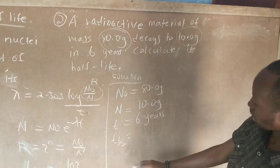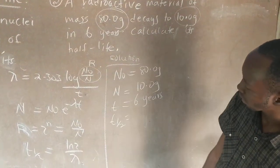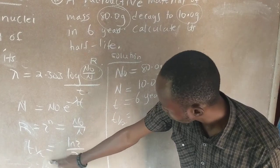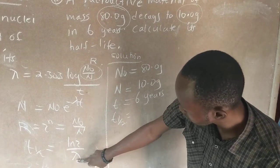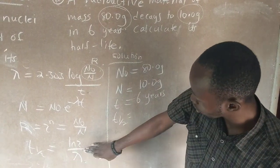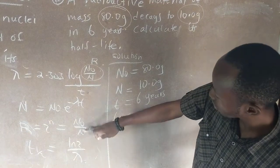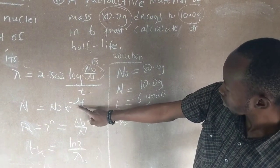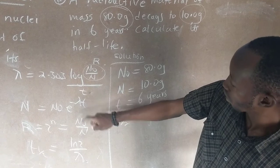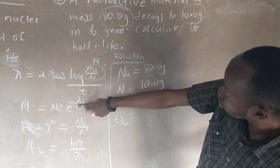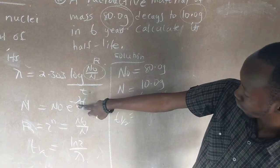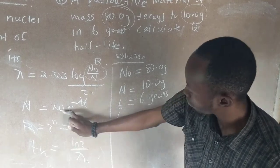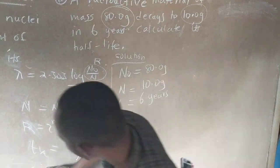Since we are required to find half life, let's look at these equations. We don't have the decay constant, so we cannot use T½ equals ln 2 over lambda. We also don't have lambda for the exponential formula. We can use the logarithmic formula but it takes more time. The easiest way uses another formula we have.